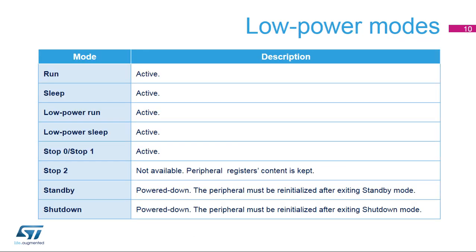The operational amplifiers are active in the following low-power modes: Run, Sleep, Low-Power Run, Low-Power Sleep, Stop-0, and Stop-1. In Stop-2 mode, the op-amp is not available, but its register content is kept. In Standby or Shutdown modes, the op-amp is powered down and must be reinitialized for use if returning to one of the higher-powered modes.